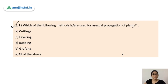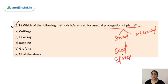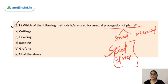The first question for today's session is: which of the following methods are used for asexual propagation of a plant? Plant propagation can be through two methods — sexual or asexual. Sexual propagation involves seeds, spores, and similar reproductive structures. Asexual propagation involves embryonic parts of the plant. The different asexual methods include cutting, layering, budding, and grafting. The correct answer is 'all of the above.' Let us understand these methods one by one.